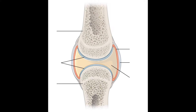The first part of a synovial joint that I'm going to identify is this right here. This outer membrane is called the articular capsule. Just deep to the articular capsule, it actually lines the inside of it — this right here is called the synovial membrane.